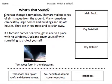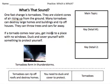What's that sound? One fast change is tornadoes. They are violent cones of air rising up from the ground. Many tornadoes can destroy large homes and buildings and rip off houses. They can throw trees and cars far away. If a tornado comes near you, get inside to a place with no windows. Duck and cover yourself with something to protect yourself. And here's a picture of a tornado.